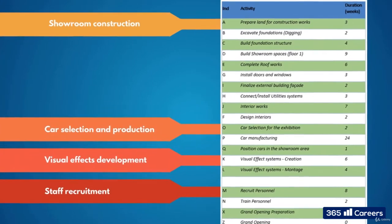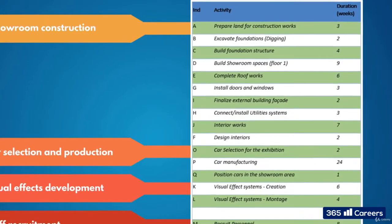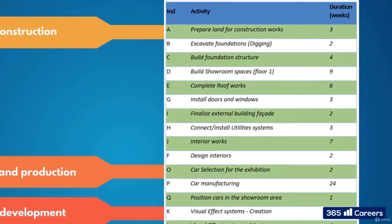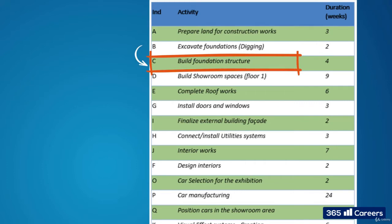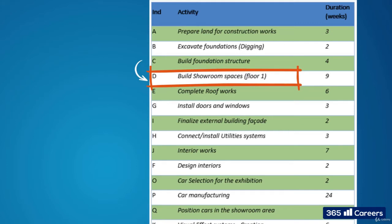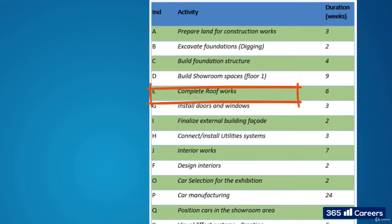Let's see how each stream flows and how or if they intertwine. Excavate foundations follows prepare land for construction works. Build foundation structure follows excavate foundations. Build showroom spaces follows build foundation structure, and so on. The majority of these are logical dependencies, but remember there can always be resource, external, and soft dependencies to consider.